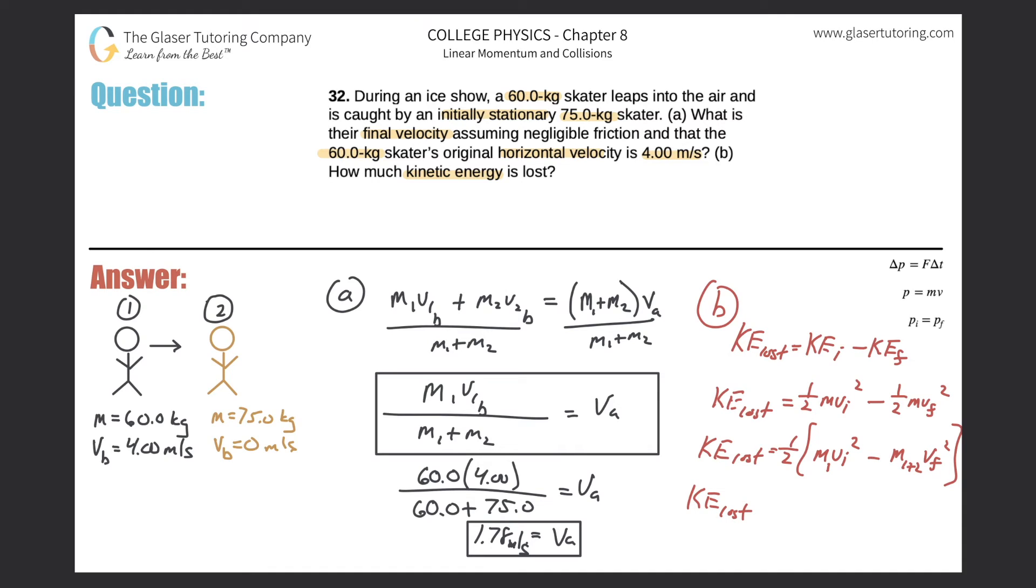So the kinetic energy lost will be equal to 1 half multiplied by the mass of the first object, which was just 60 kilograms, multiplied by then its velocity, which was just 4. I'm going to leave out some of the decimals to save a little space. Then that's going to be minus the mass of the first object plus the second object. Remember it was 60 kilograms plus the 75. That was their combined mass. We can simply do that math right now, plug it into the calculator. It should come out to be 135.